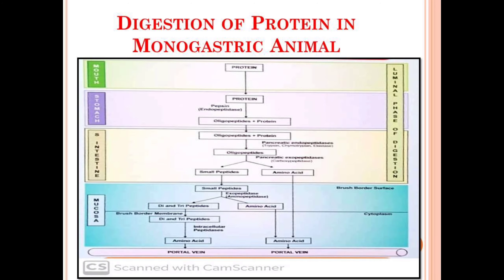In the small intestine, the pancreatic exopeptidase — for example, carboxypeptidase — will act on the oligopeptides and convert them into small peptide chains or amino acids. The pancreatic exopeptidase acts on the end chains of the molecule.